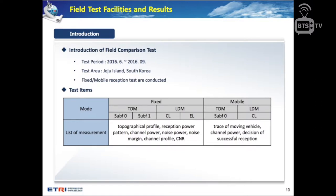Field test facilities and results: the test period ran from June to September last year and the test area is Jeju Island, where we conducted both mobile and fixed reception tests. For the fixed test, topographical profile, reception power pattern, channel power, noise power, noise margin, channel profile, and CNR were measured for four configurations: TDM subframe 0, subframe 1, LDM core layer, and LDM enhanced layer. For the mobile test, the test trace of the moving vehicle, channel power, and decision of successful reception were measured for TDM subframe 0 mobile case and LDM core layer mobile case.